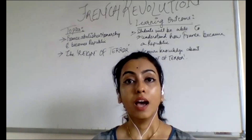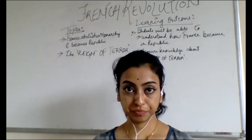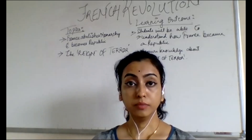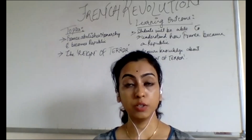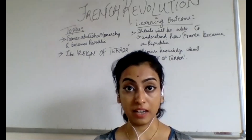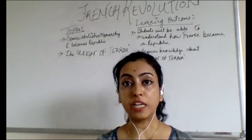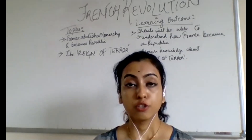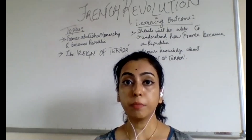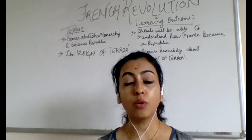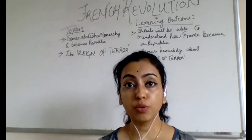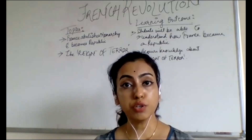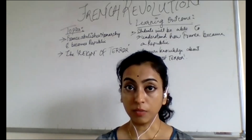In today's class we will be covering the topics written on the board. We will talk about how France became a Republic — how France overthrows monarchy and finally becomes a Republic — and we will also look into what is the Reign of Terror. By the end of class you will know the various reasons how France overthrew monarchy and became a Republic, and what the Reign of Terror was.